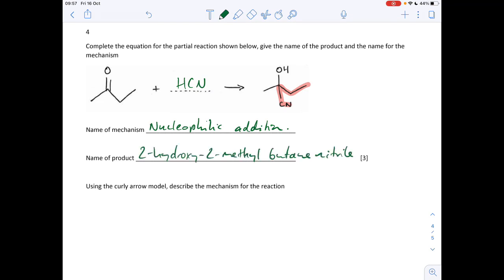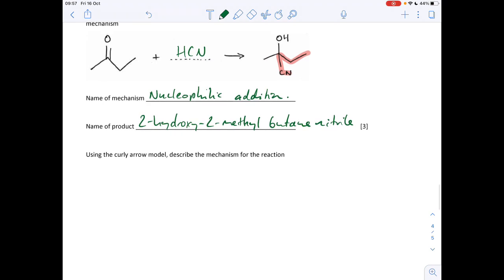And you'll see there, hydroxy comes first in the name because H comes before M in the alphabet, so we're using that alphabet rule there. And the final part of the question: using the curly arrow model, describe the mechanism for this reaction. The lone pair of electrons on the carbon of that CN minus ion is donated to that delta positive carbon, so that's the nucleophile bit. This is acting as a nucleophile electron pair donor. That's going to repel the pi electron pair completely onto that oxygen, and it's going to generate an intermediate. And the H plus from the HCN is going to be attached via the lone pair on the O minus to generate the product.